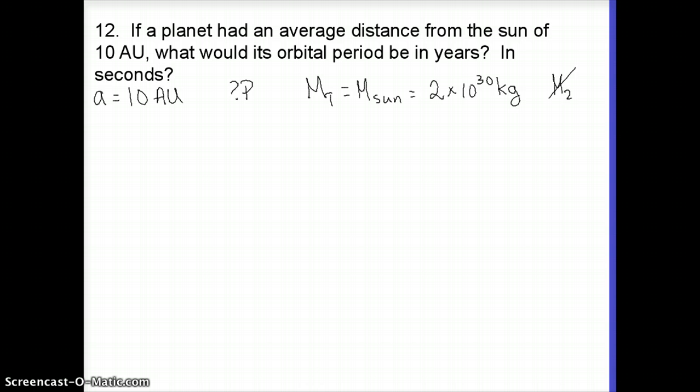Now before I start plugging things in I need to get my units right for the semi-major axis. So we're going to convert the AU into meters. There's 1.5 times 10 to the 11 meters in 1 AU. So 10 AU is 1.5 times 10 to the 12.